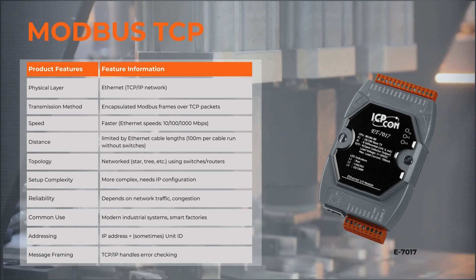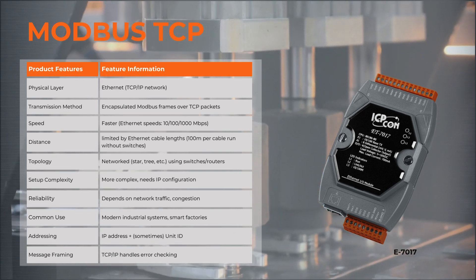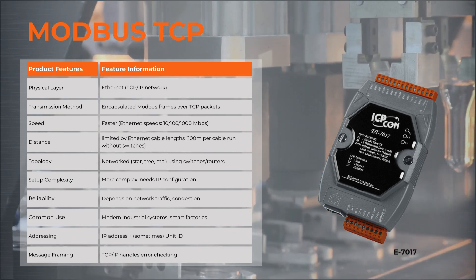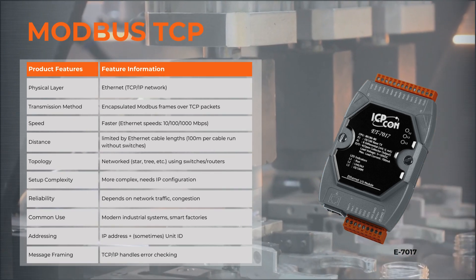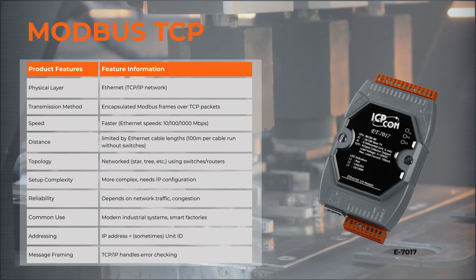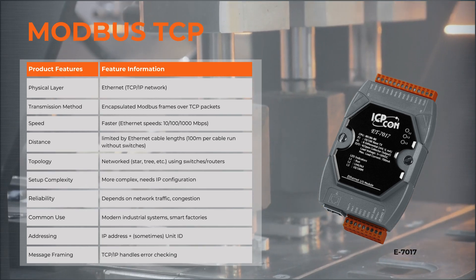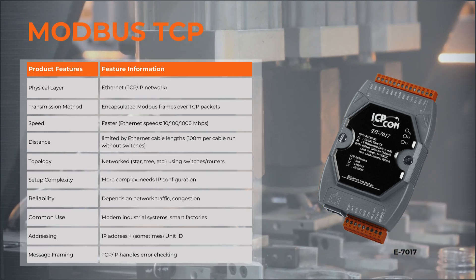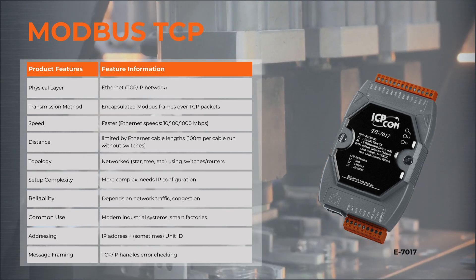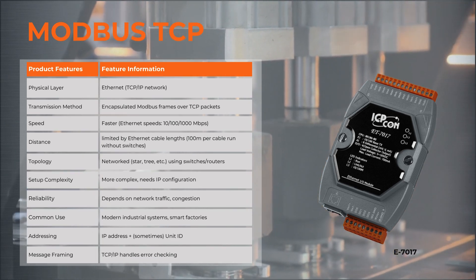TCP distance is limited by Ethernet cable lengths — 100 meters per cable run without switches. The topology is networked: star, tree, and more, using switches or routers.